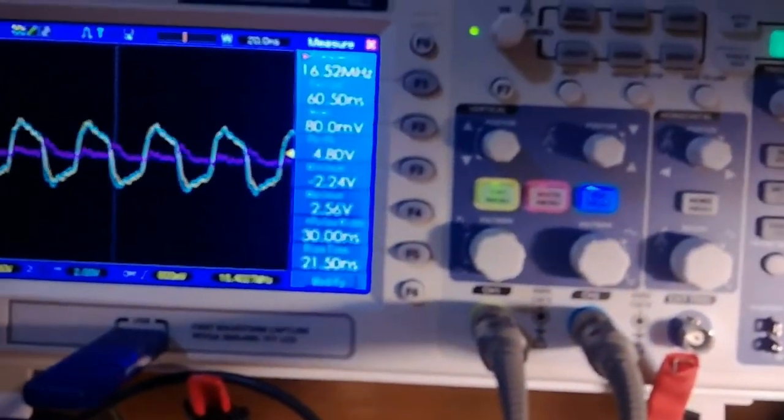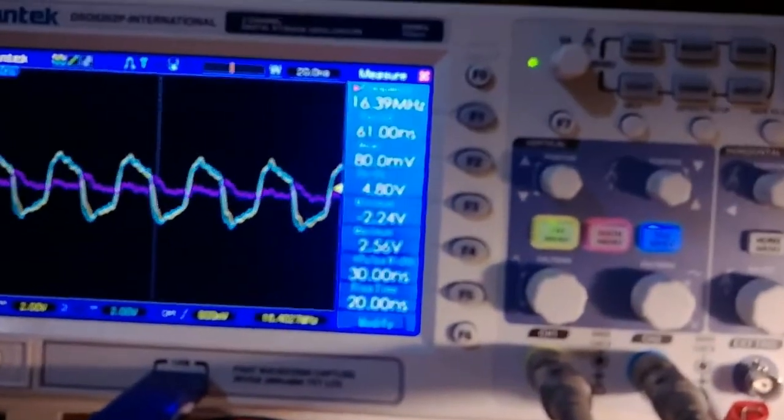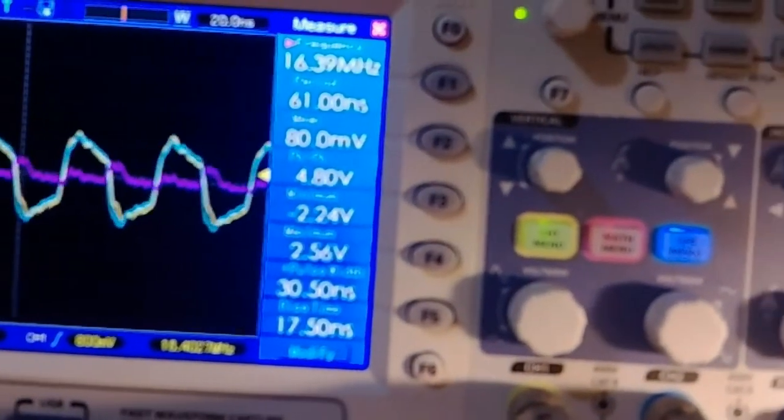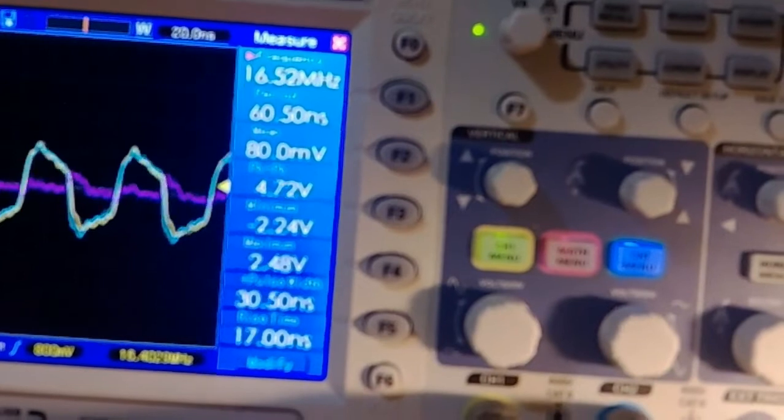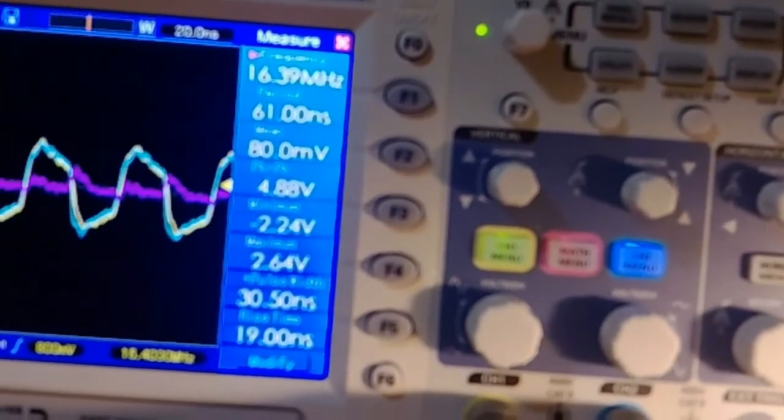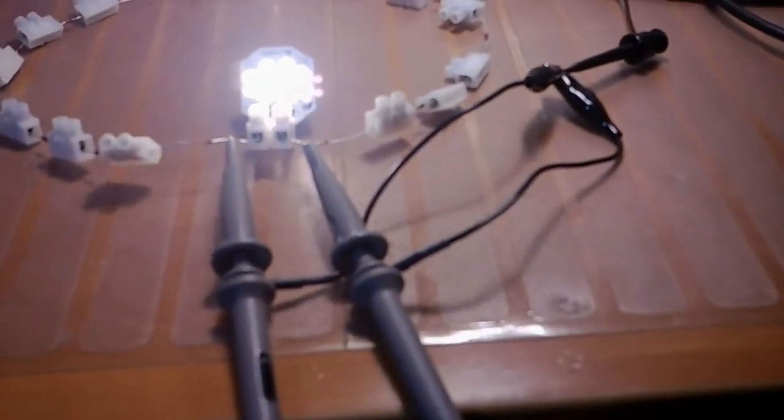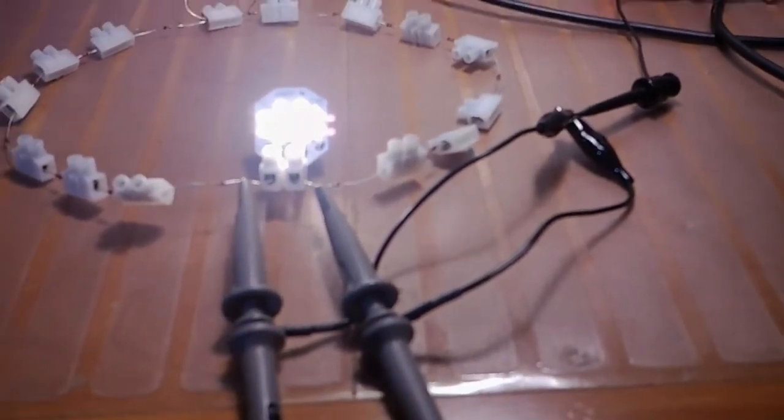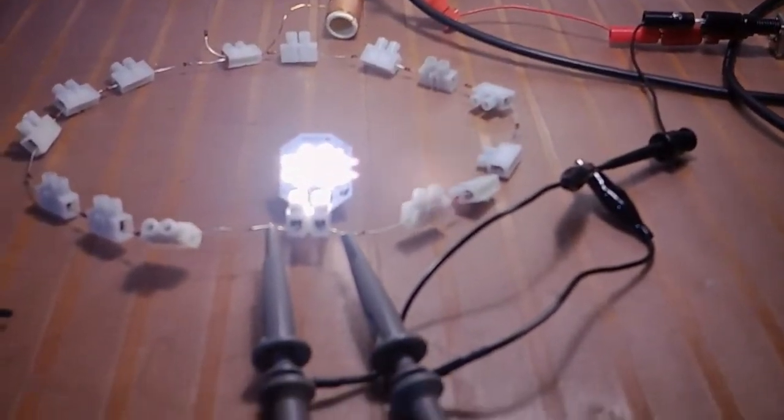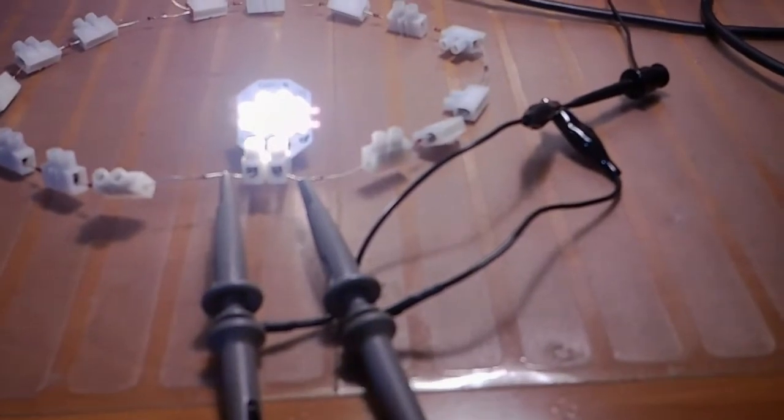On channel A, I don't know if you can see it or not, but on channel A we have 4.72 or 4.8 volts peak to peak across that Cree board. So we're running this board at about 5 volts. Now I think that should be able to speak for itself.